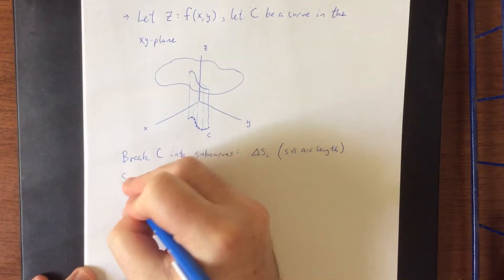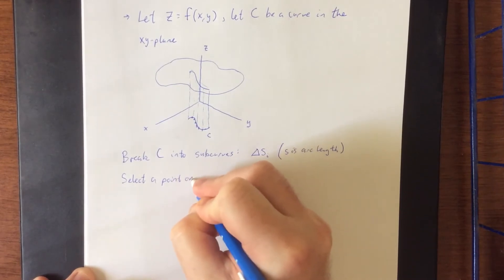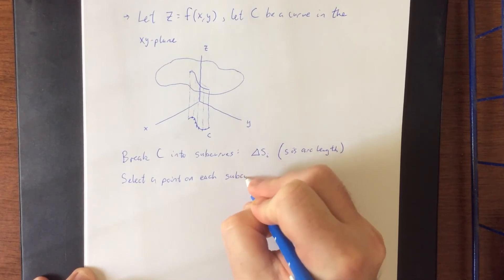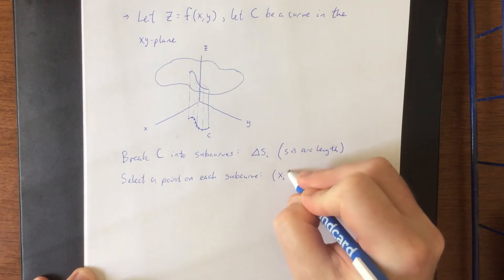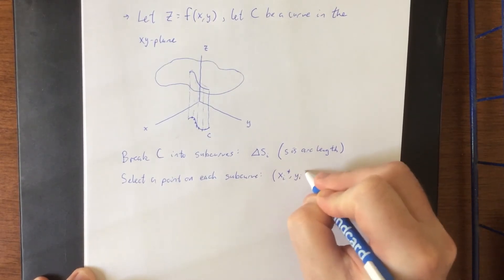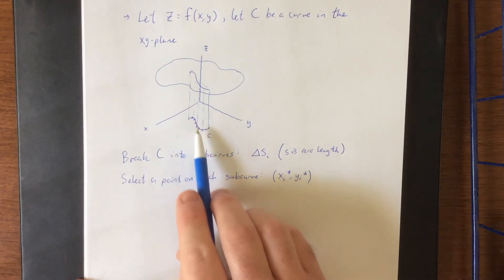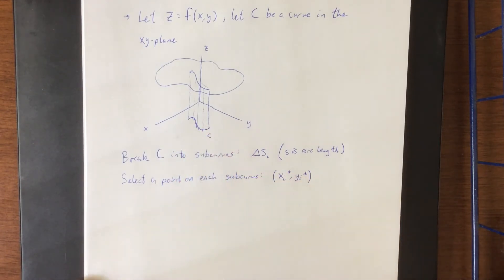Then select a point on each sub curve and we will refer to that as x sub i star and y sub i star. Now back when we were doing double integrals and we needed both an x and y, it was double indexed because there were two different possibilities for x and y based off of the rectangles. A curve however is a one-dimensional thing and because it's only one-dimensional we only need one index for each of these.